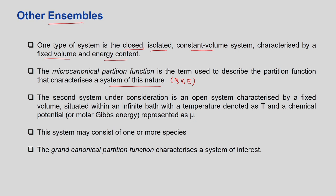The second system we will explore is an open system. Earlier it was a closed system where both systems are not free to exchange matter with the surroundings, but here it is an open system able to freely exchange matter. It has a fixed volume but is situated within an infinite bath — an infinite temperature thermal reservoir with temperature T and a chemical potential. Chemical potential means the number of molecules in each system can be interchanged or transferred. These are represented as μ. The system may consist of one or more species, and the grand canonical partition function is associated with the grand canonical ensemble.